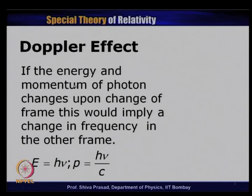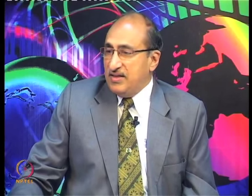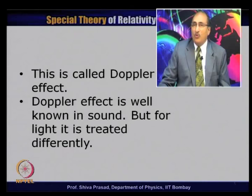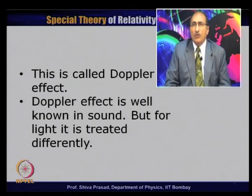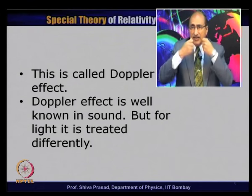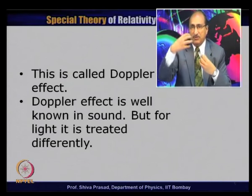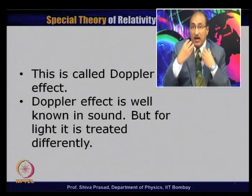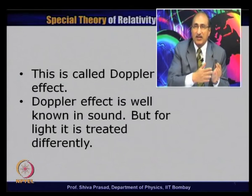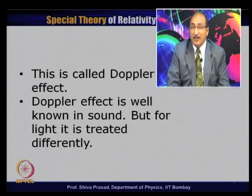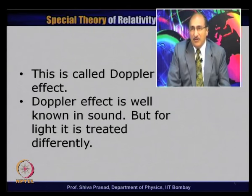If the energy and momentum of the photon changes upon change of frame, this implies a change in frequency — this is called the Doppler effect. Doppler effect is well known in sound. A familiar example is a train coming towards us: the frequency of the whistle appears higher as the train approaches and lower as it recedes. This is well understood by wave theory in classical mechanics. The case of light must be treated somewhat differently from the sound Doppler effect due to relativistic effects.